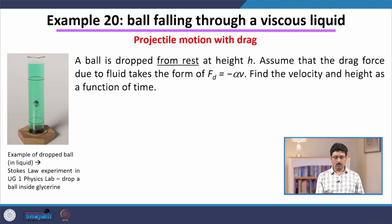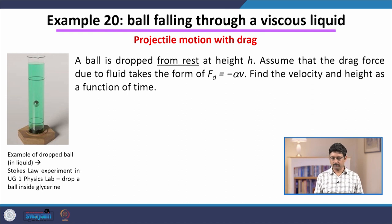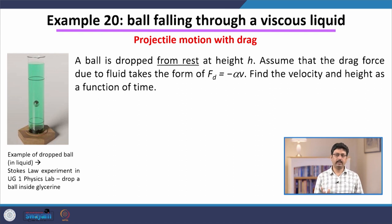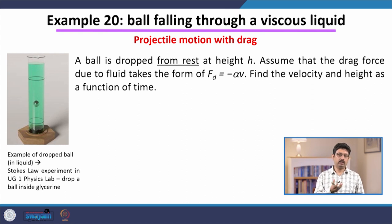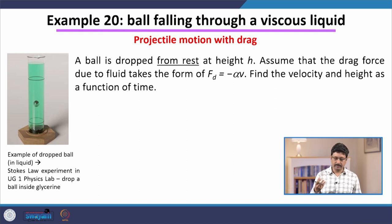Consider a ball dropped from rest at a height h in a physical liquid. This liquid could be something like air, or a viscous liquid like glycerin or honey, which are typically used in what is called a Stokes law experiment for measuring the viscosity of liquid in a typical undergraduate physics lab experiment.